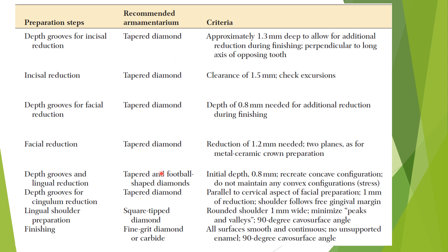Preparation steps recap: use tapered diamonds throughout. Steps include incisal reduction, depth grooves on the facial surface, facial reduction, depth grooves on the lingual surface, depth grooves on the cingulum, lingual shoulder preparation, and finishing. The clearance is 1.5 mm incisally, 1.2 mm facially, and a 1 mm width of the shoulder circumferentially.